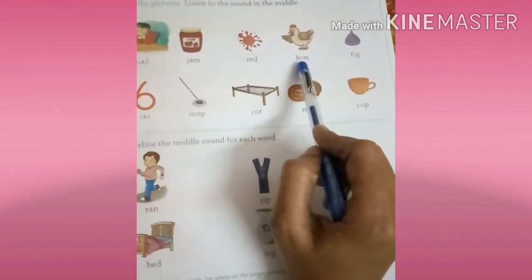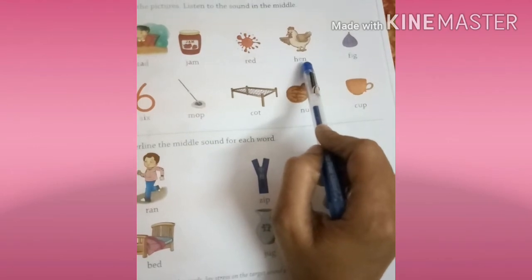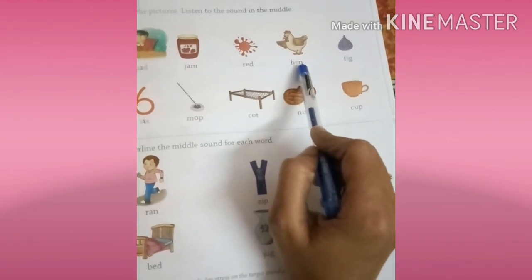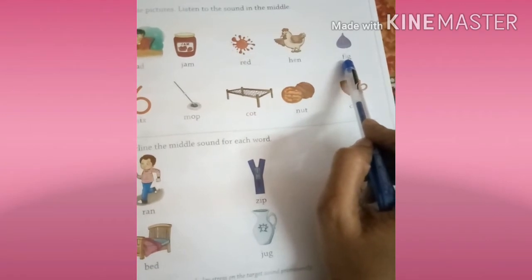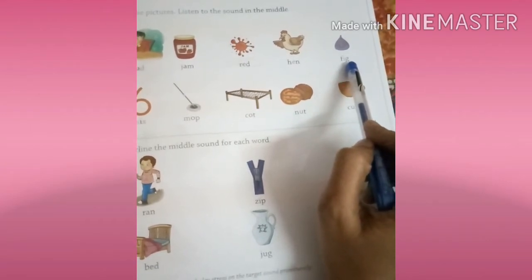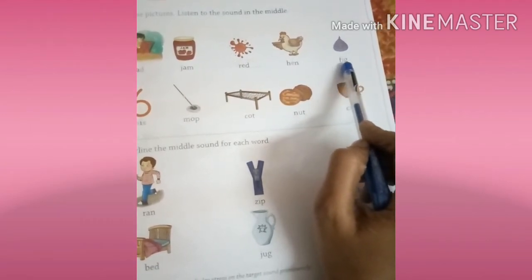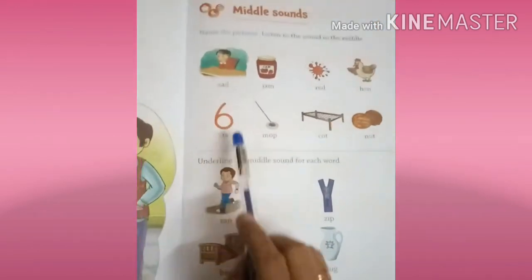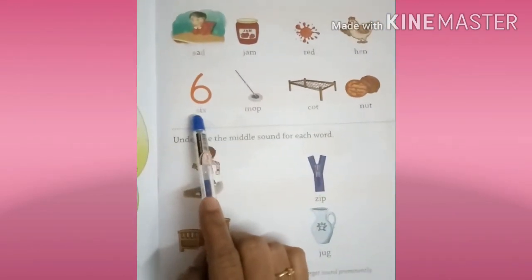H sound is H, E sound is E, N sound is N. Hen, okay. F sound is F, I sound is I, G sound is G. Fig, okay.